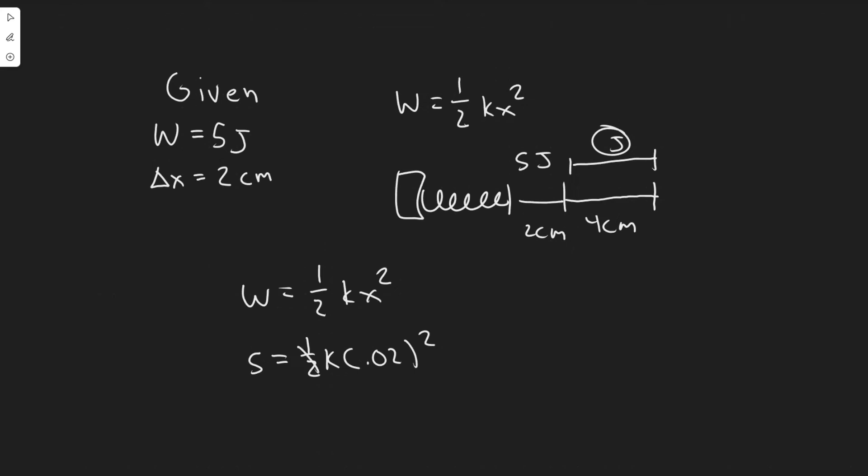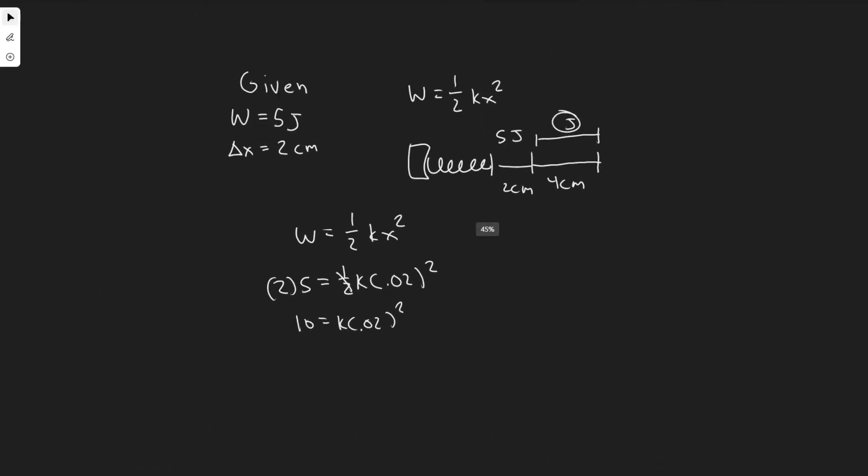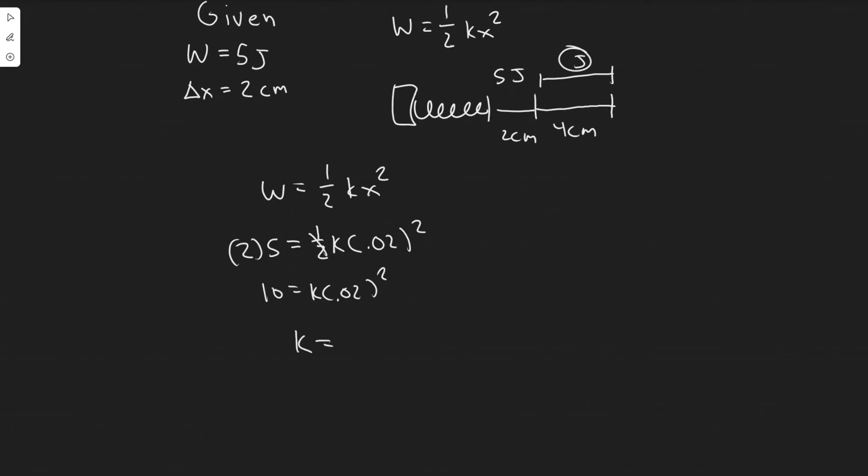So multiply both sides by two. You're going to get 10 equals k times 0.02 squared. And then you can divide, I'm not going to do that, but just divide it. 10 divided by 0.02 squared. You're going to get 25,000.